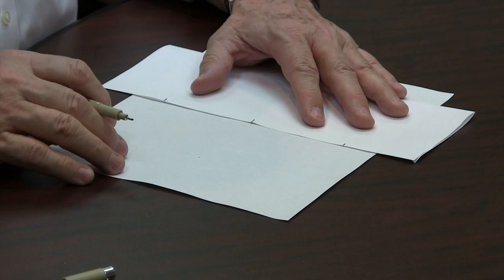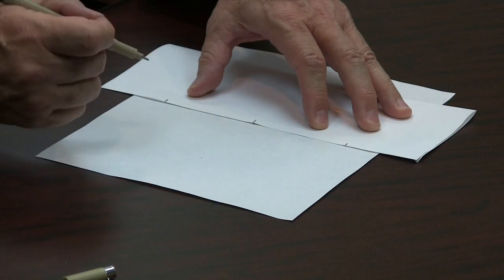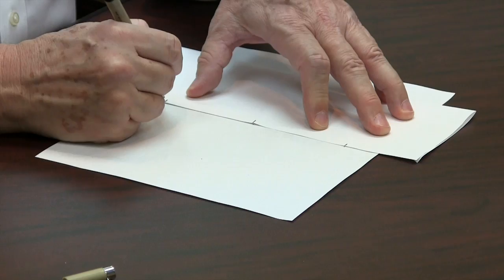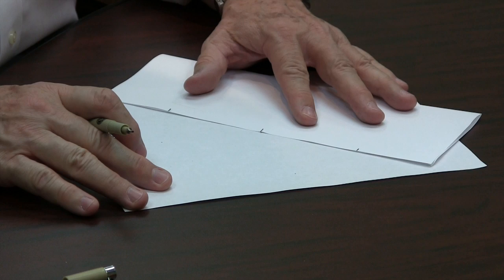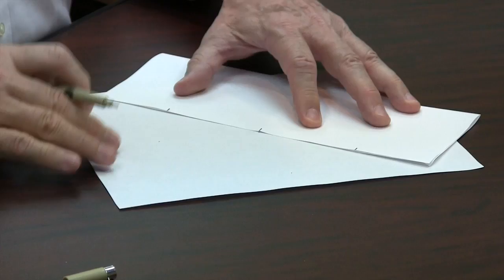Next, you're going to line up, and I usually do this by eye, you're going to line up your template ruler here so that it's horizontal across the page. You're going to draw your next two dots, and then you're going to draw the next two outside dots.